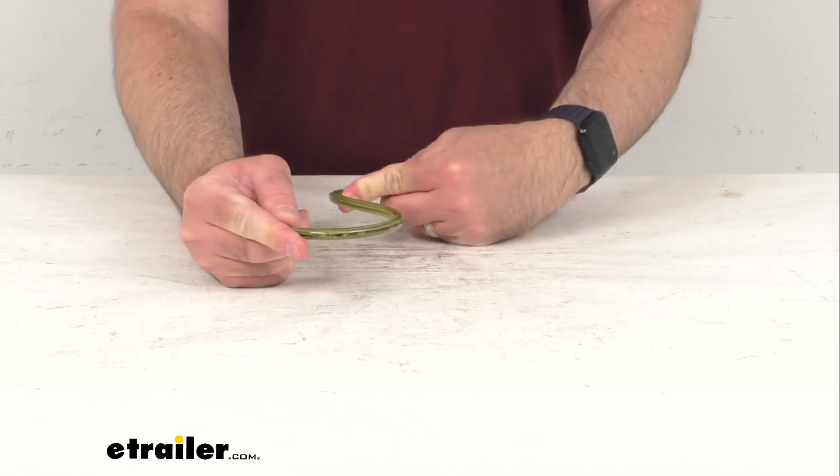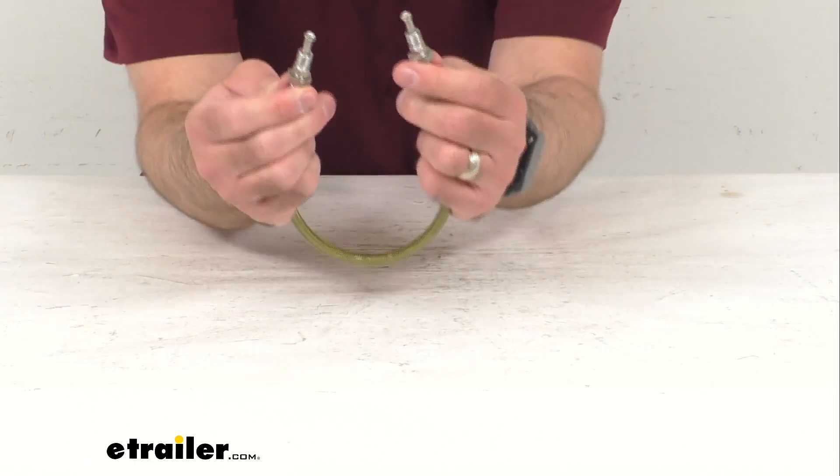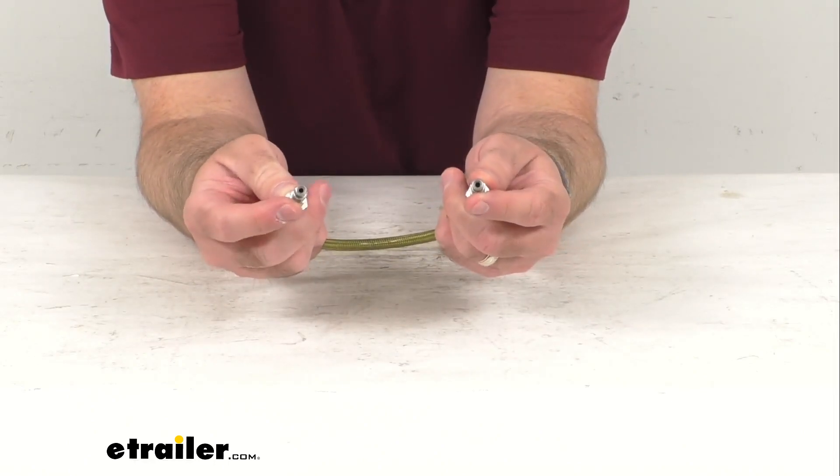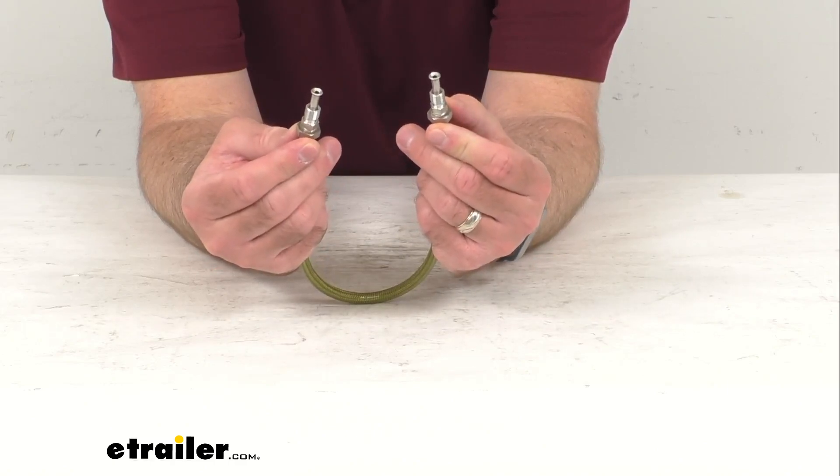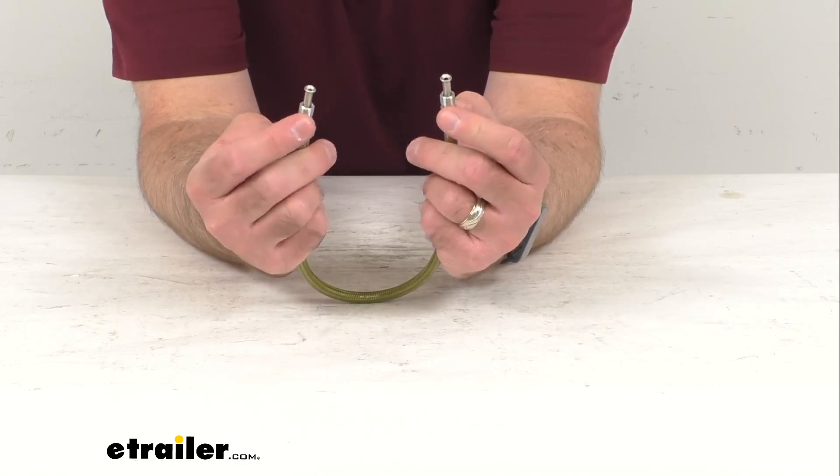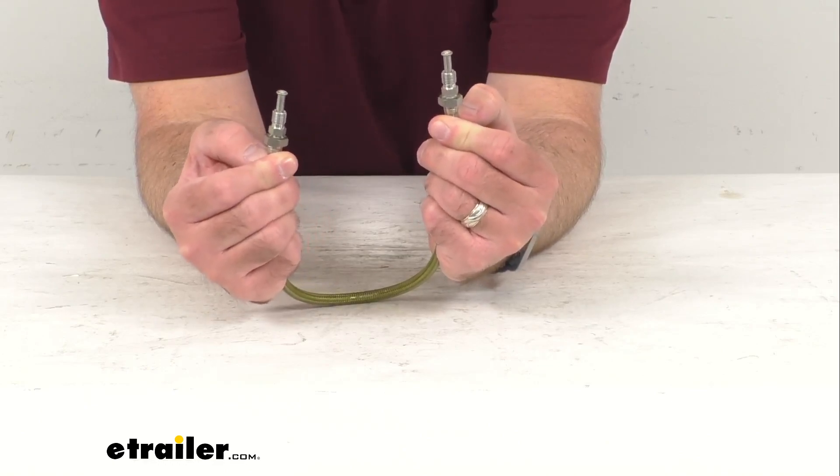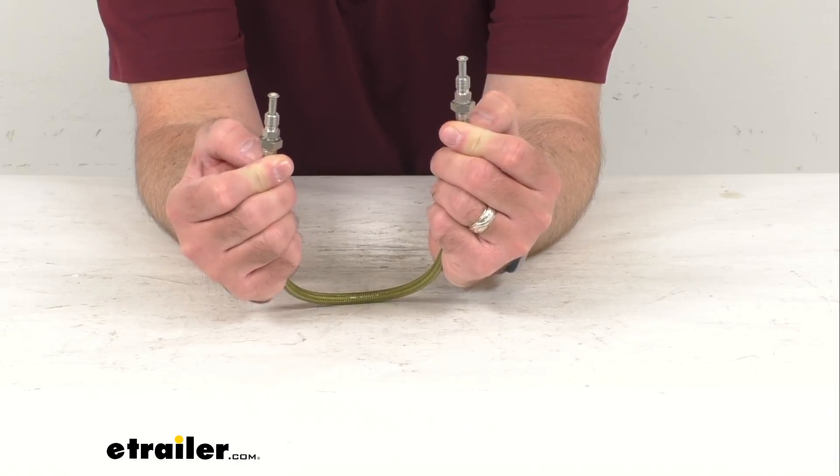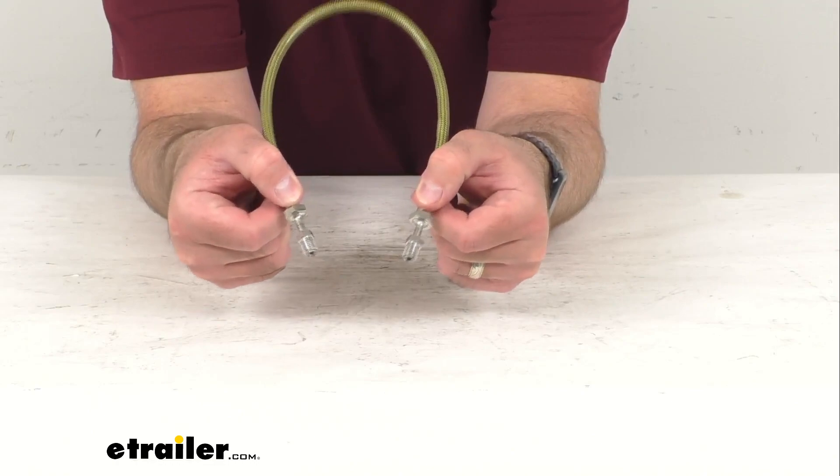This stainless steel hose meets Department of Transportation standards. It has 3/16 inch stainless steel male inverted flare fittings on both ends that resist corrosion and are stronger than brass to reduce splitting, making it ideal for boat trailers.